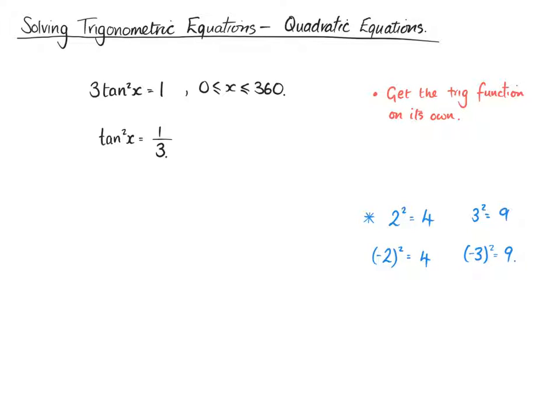So when we look at our function here, our tan squared of x, and we take the square root to get rid of it, remembering that tan x squared is 1 third, so we're going to take the square root to cancel that out to get the tan x on its own. And then we have to do the plus or the minus of the other side. So tan x is equal to plus or minus the square root of 1 third.